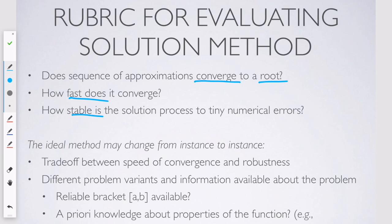And it's not like there's one method of root finding or anything else that's always the ideal method. It might change from instance to instance. And just as a few examples, there can be a trade-off between the speed of convergence and the robustness of the algorithm. Like, how sure are you that the algorithm is gonna succeed?